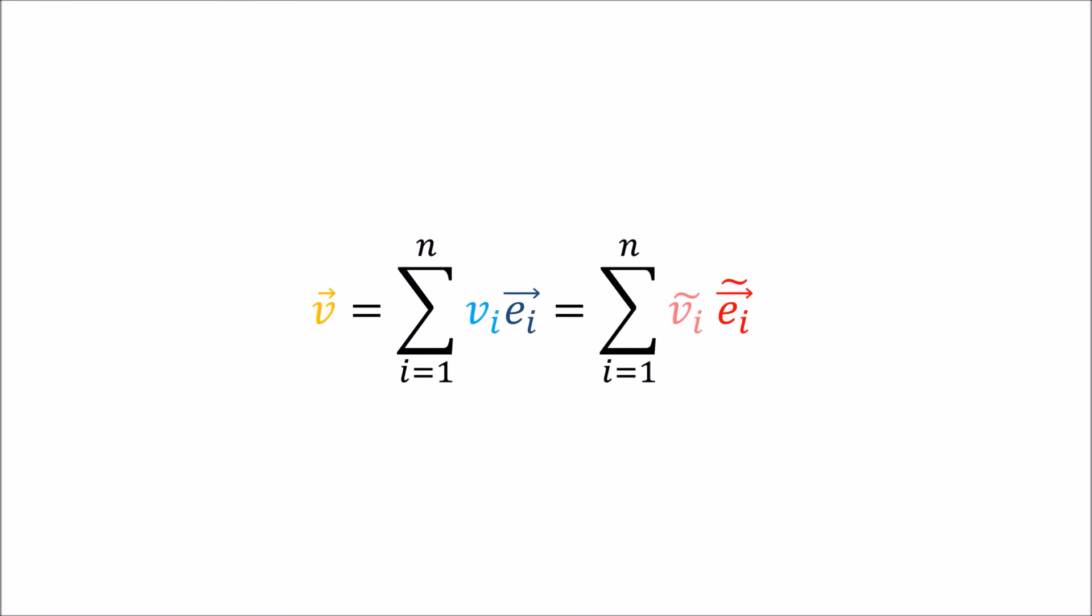One last thing I'm going to mention. So here you can see we've written the vector V as linear combinations of the old and new basis. But these vector components, since they are contravariant, we're going to make a small change in the way we write them. What we're going to do is, instead of writing these little I indices below the V, we're going to switch that up and we're going to write the indices above the V instead. And this reminds us that the components are contravariant.